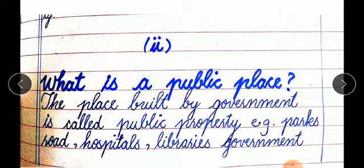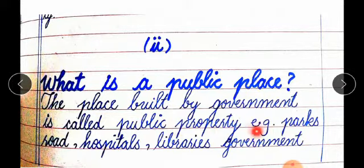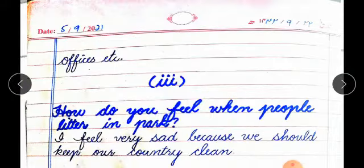Second: what is a public place? The place built by government is called public property. For example: parks, roads, hospitals, libraries, government offices, etc.